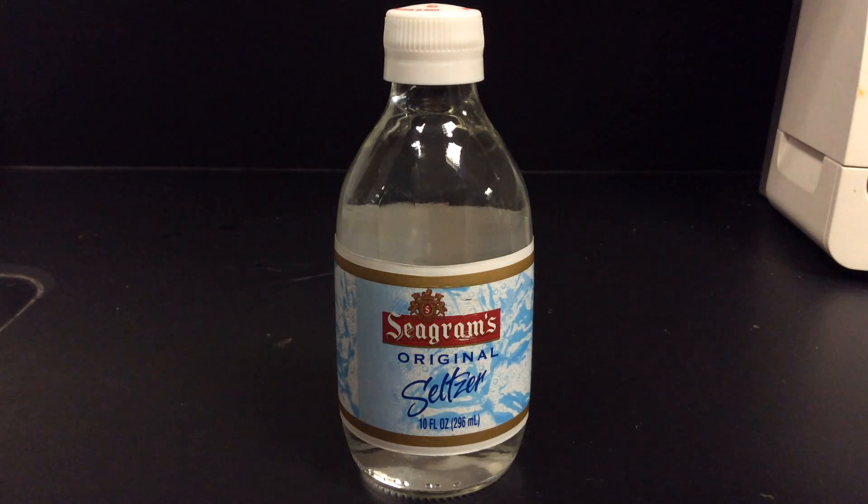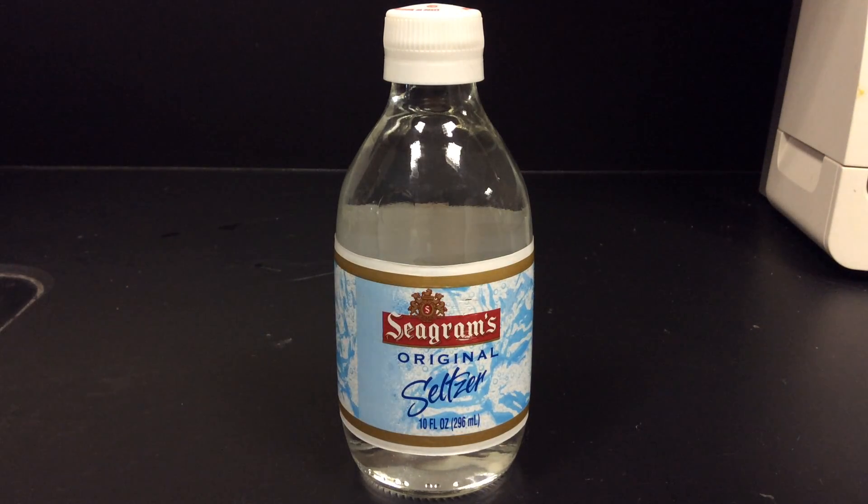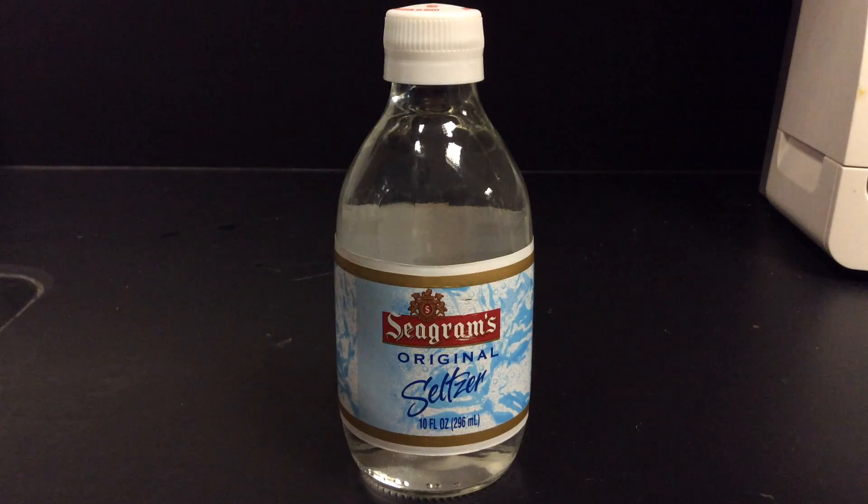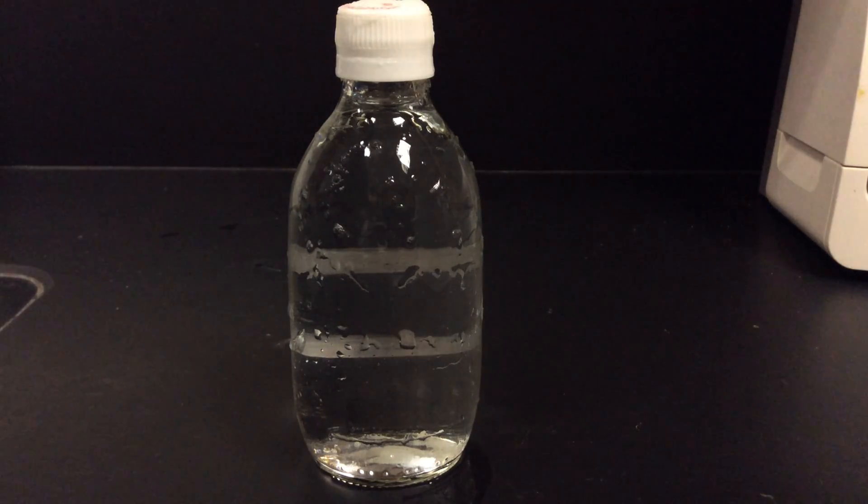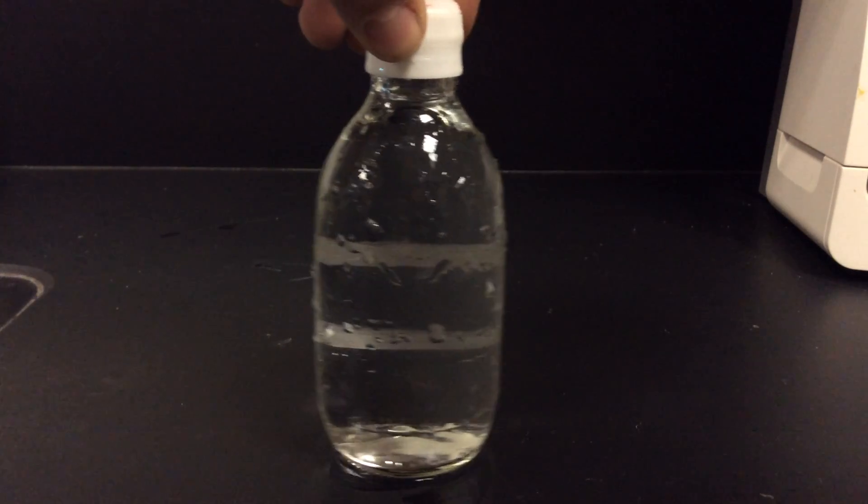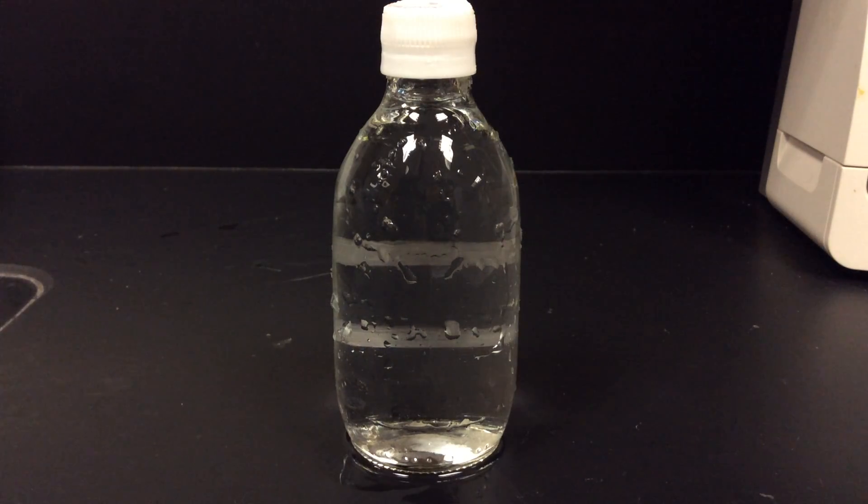So I'm going to take a very cold seltzer bottle, replaced that, took the label off so we can see it, and I'm going to show you that there's my bottle there, and it's about negative five degrees Celsius.